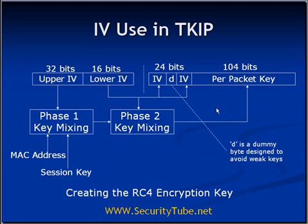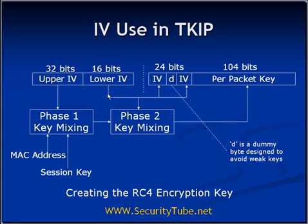Now in the TKIP algorithm, the IV is not simply a clear-text IV. Some key mixing is done before generating the per-packet key as well as the IV. As explained in the TKIP introduction slides, there are two parts of the IV: the upper IV space is 4 bytes or 32 bits, and the lower IV is 2 bytes or 16 bits. The lower-order 2 bytes of the IV are used in phase 2, while the upper-order 4 bytes are used in phase 1. The reason for this separation is simply computational simplicity.